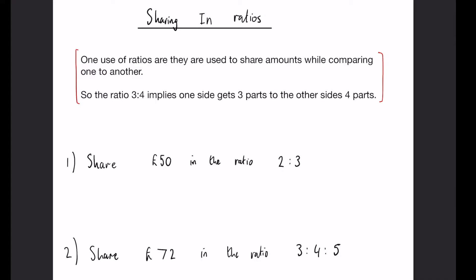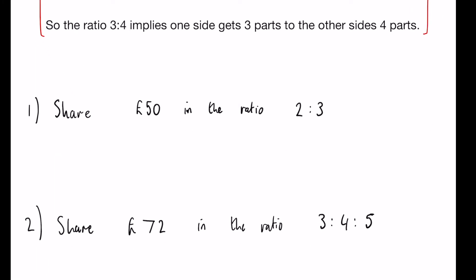Today we're going to look at how we do this with three different questions. Starting off with question one: share £50 in the ratio 2:3. The most visual way to learn this is to imagine you've got buckets. This side has 2 buckets, this side has 3 buckets.